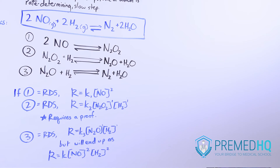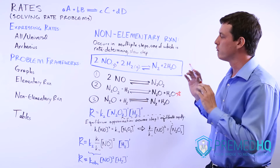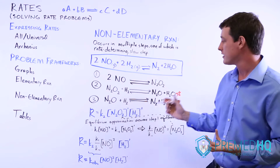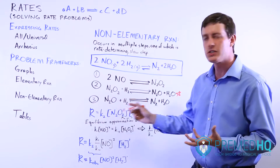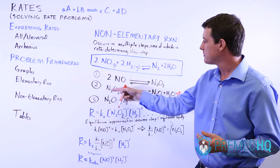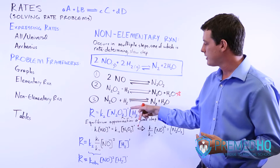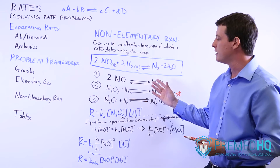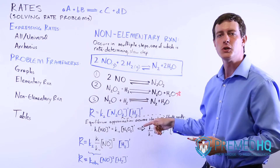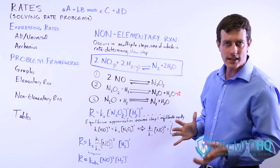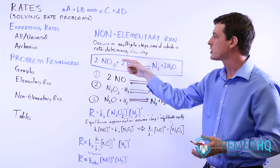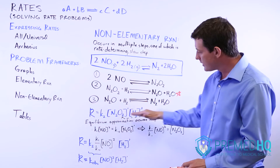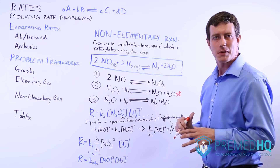So in this case, step two is the rate-determining step. If we want to express the rate of this entire reaction as though step two were an elementary reaction, we would end up with: rate equals K of step two times N2O2 raised to the first power times H2 raised to the first power. The only problem is that if you're in a lab, you're never going to be putting in any N2O2. So what you do is use what's called an equilibrium approximation.